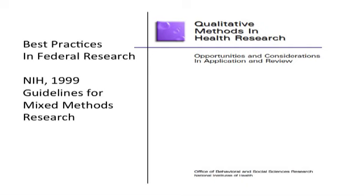The federal government has been interested in mixed methods research — the National Science Foundation is a good illustration, with their standards on evaluation and inclusion of a section on mixed methods research. Back in 1999, the National Institutes of Health came up with some guidelines for qualitative methods and health research, put together by a panel of researchers. If you look closely at this 1999 guideline, you will see a section on what they called combining quantitative and qualitative research. So they started this process of developing recommendations for how to do mixed methods research in 1999.